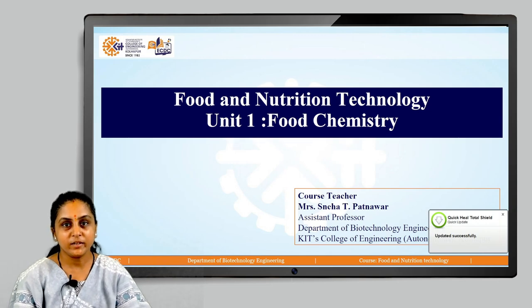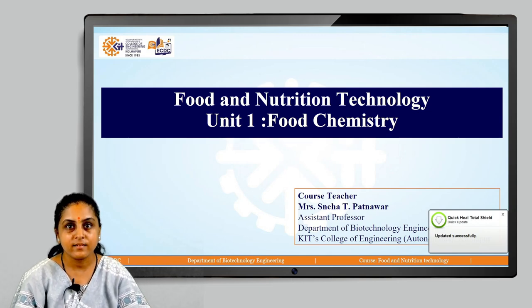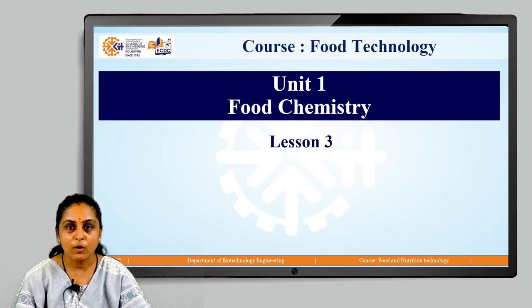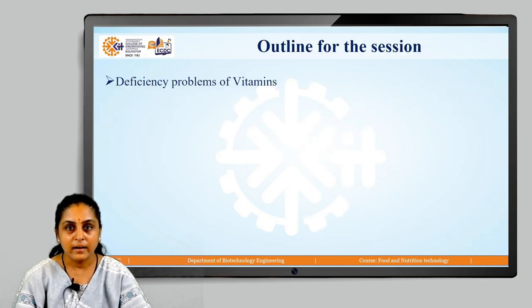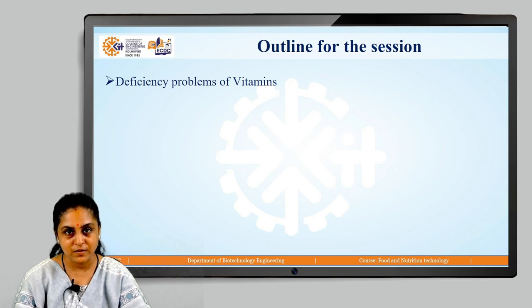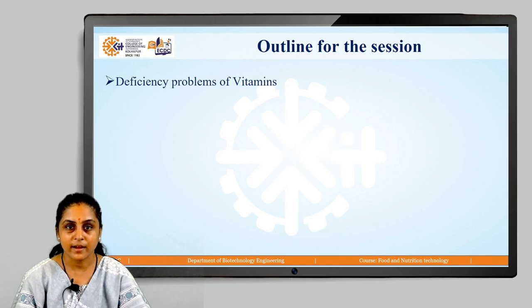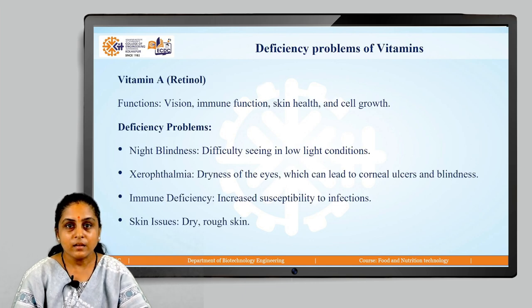Good morning class. Today we are here with one more lesson under unit 1, which is food chemistry. Let us begin with lesson number 3 of unit 1. The outline for today's session is deficiency problems of vitamins. In our previous session we had discussed about vitamins, its classification and sources of vitamins. In this session we are going to look at deficiency problems of vitamins.